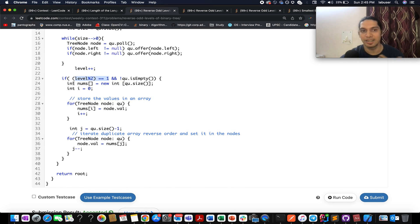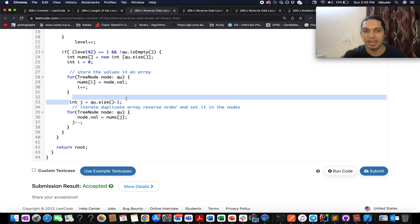I create a duplicate array, and here node values will be stored rather than the node references that are present in my queue. Here I am storing those node values in the form of an array. Moving ahead, I iterate over those node values in the reverse order. I iterate the duplicate array in reverse order and set them as part of the nodes. So I iterate over the queue again and I set node.value to nums[j]. I decrement the j pointer. Once I am out of this loop, I simply return the root. So let's try this out.